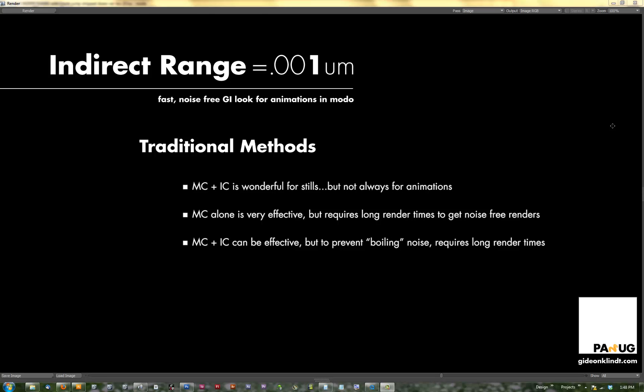Let's go ahead and dive right in. Before we get further into it though, I want to go over what I've labeled as traditional methods. I'm citing these as traditional methods going back maybe six years from now — before that, conventional lighting was more of a traditional method. So let's look at what we currently use in Moto for animation renders. The first option is Monte Carlo plus Irradiance Cache, which is the default setup of the render engine for Moto.